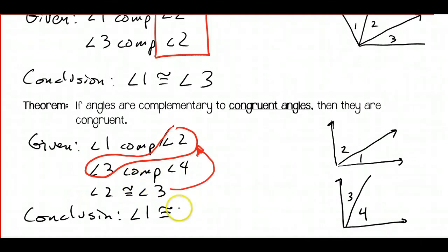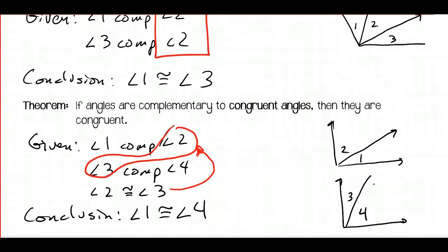Angle 1 is congruent to angle 4. The way I drew it may not be to scale — you can't assume the relative size of angles, so that's fine. Angle 1 and angle 4 are complementary to congruent angles; angles 2 and 3 are congruent. Therefore, angles 1 and 4 are also congruent.